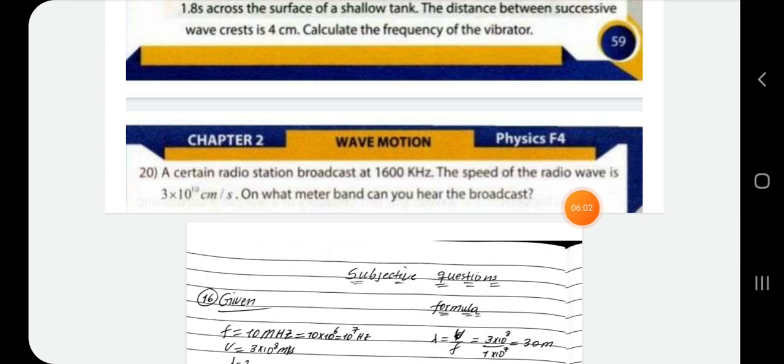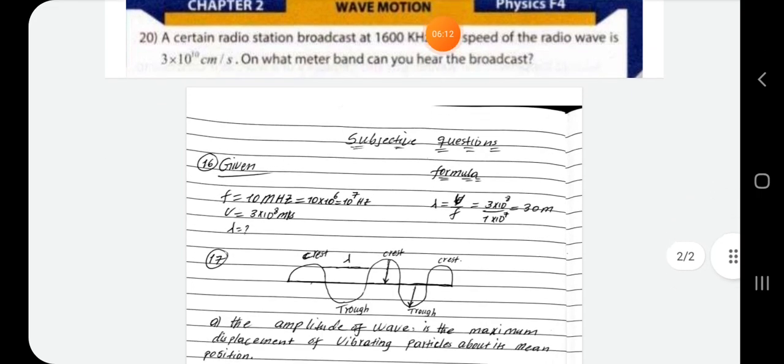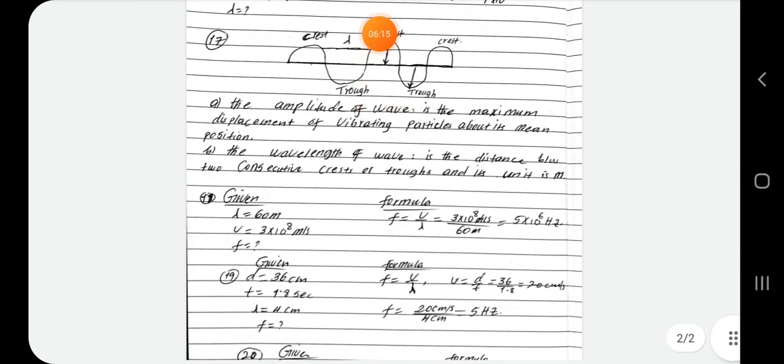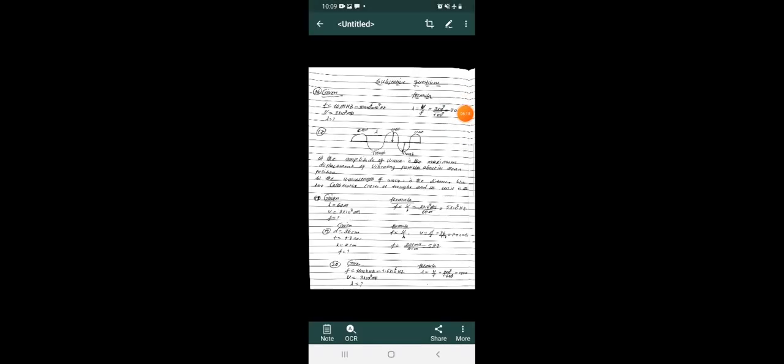The speed of radio wave is 3 times 10 to the power, centimeter per second. On a wet meter band, you can hear the broadcast. Because it is different from the world. For a band that has been improved, it is called scientific notation. These are in the world where it has 3 times 10 to the 6. But it is 3 times 10 to the 8 meters per second. However, it is in centimeters, and we are using 3 times 10 to the power of 10 centimeter per second.